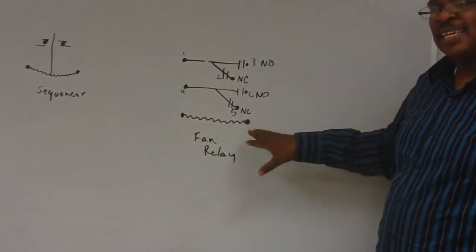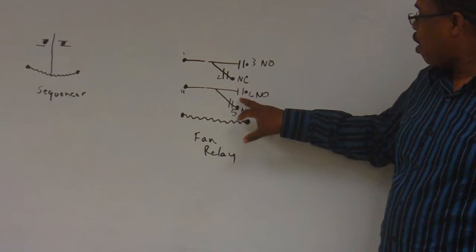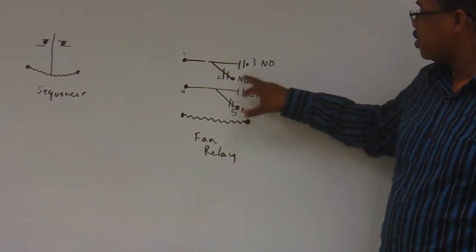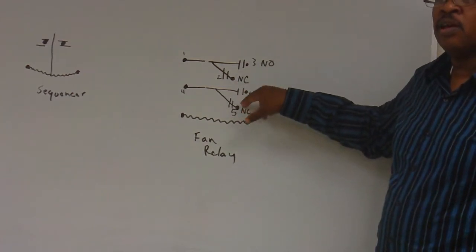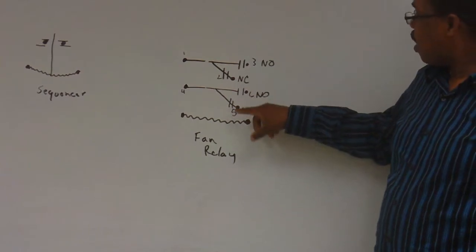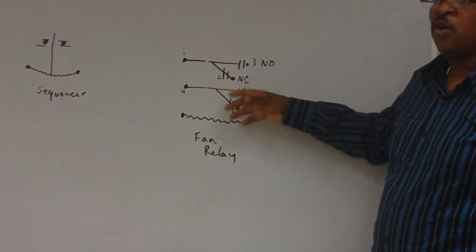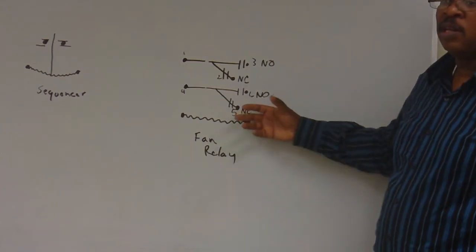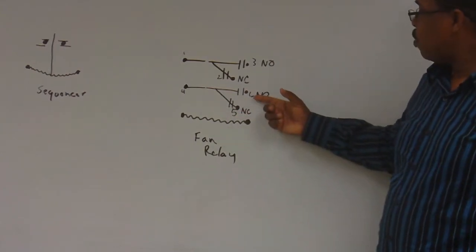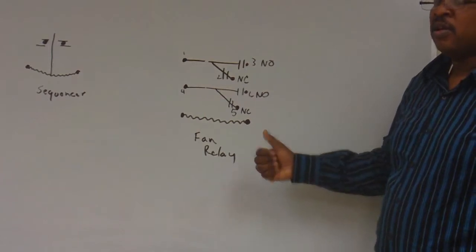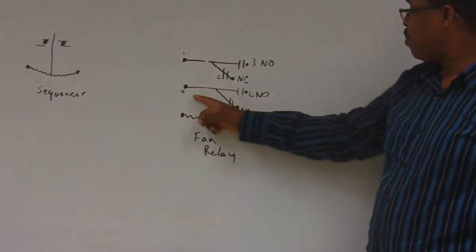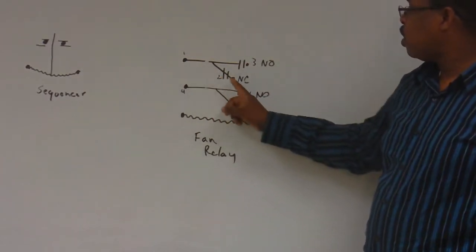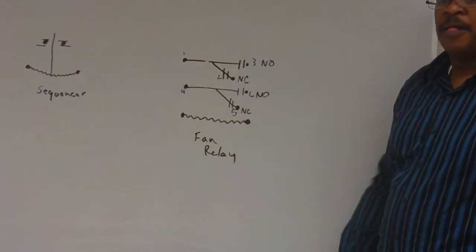Now, when the fan relay is energized, our normally open contacts do what? Close. And our normally closed contacts open up. So that means they will stop power or normally close when it's energized. Normally open will pass power when it's energized. When it's not energized, then we can pass power to our normally closed circuits.